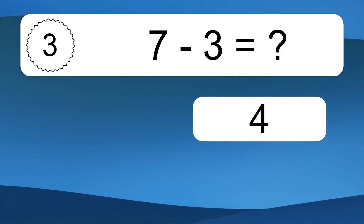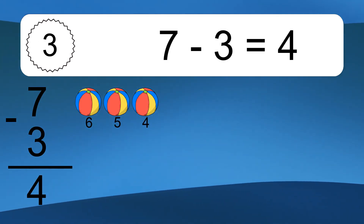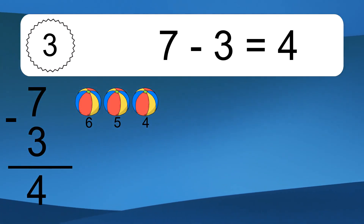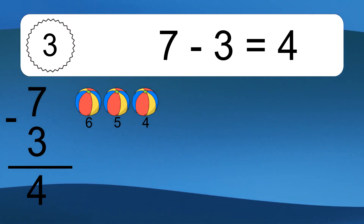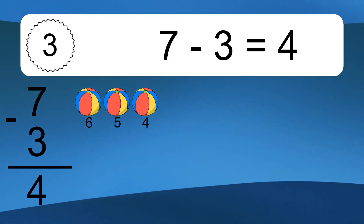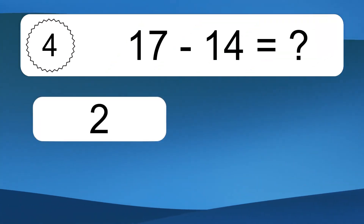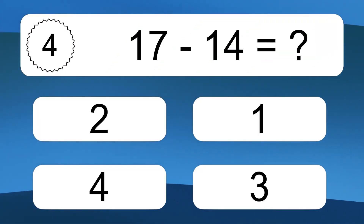7 minus 3 equals what? 7 minus 3 equals 4. Let's count it. 6, 5, 4.